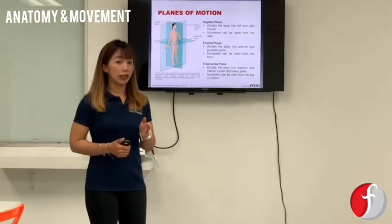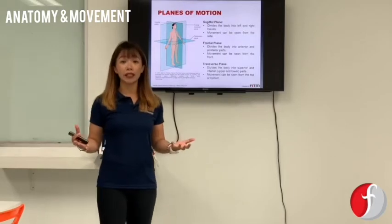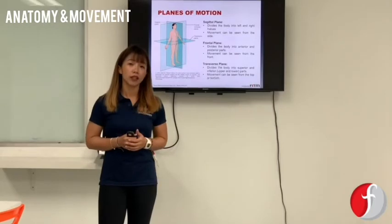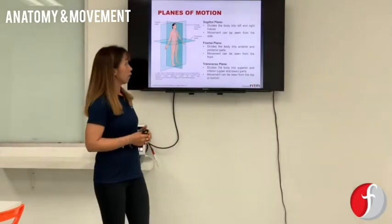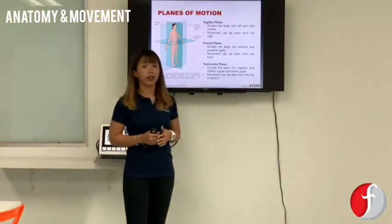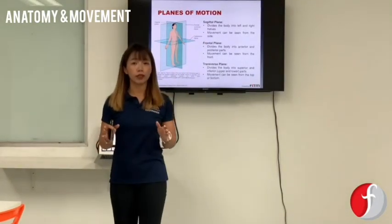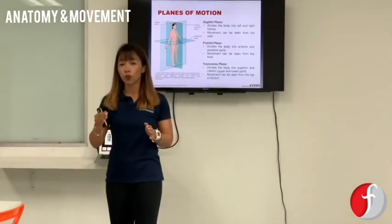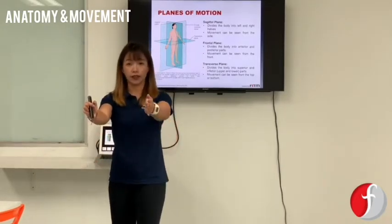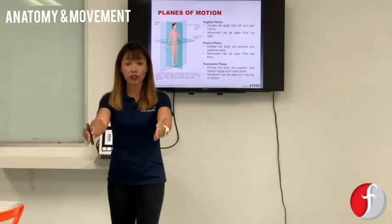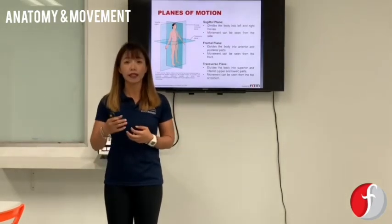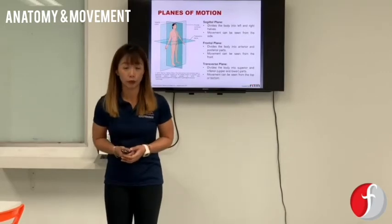Now let's look into planes of motion, which is basically how your body is designed to move. There are only three planes your body is designed to move in. First, we've got the sagittal plane. The sagittal plane refers to any movement you can perform — imagine a wall very close to you on both sides. Movements that can happen when the wall is right beside you and you're restricted, we call that a sagittal plane movement.